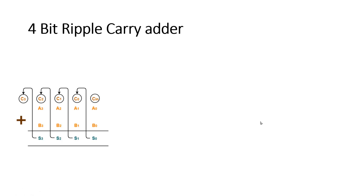Now let us understand the implementation of a four-bit ripple carry adder. Here I have taken two numbers A and B — A is A3 A2 A1 A0 and B is B3 B2 B1 B0 — along with an input carry C_in. A0 and B0 are added together to give sum bit S0 and carry C0, which is forwarded to the next position. At the second position we add three bits: C0, A1, and B1, giving sum S1 and carry C1, which is forwarded to the next position.